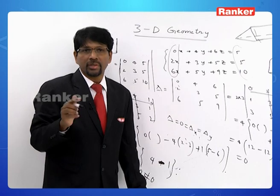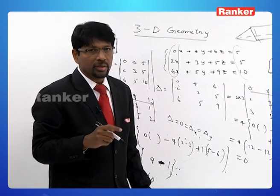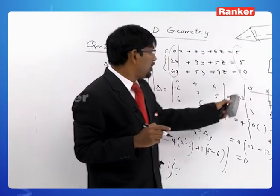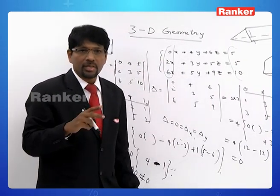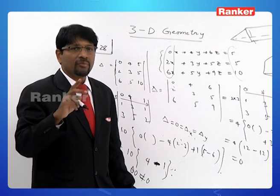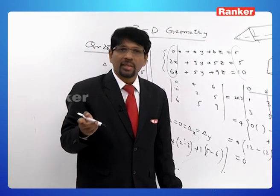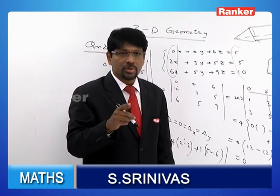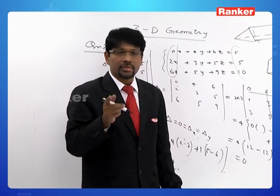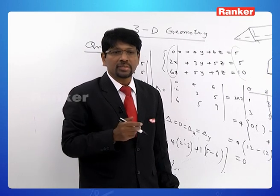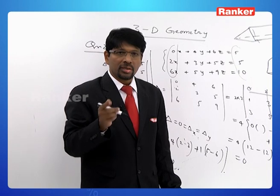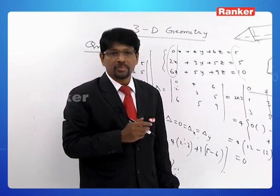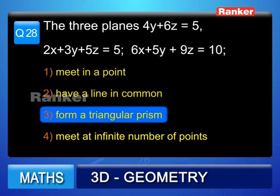In summary: find delta (determinant of coefficient matrix), delta_x, delta_y, delta_z by replacing each column with the right-hand side. If delta ≠ 0: unique solution, planes meet at one point. If delta = 0 and delta_x = delta_y = delta_z = 0: infinitely many solutions, planes meet in a line. If delta = 0 and at least one of delta_x, delta_y, delta_z ≠ 0: inconsistent system, planes form a triangular prism. Answer is option 3.